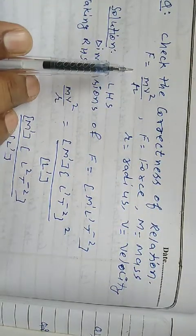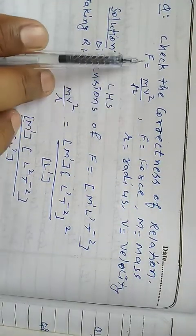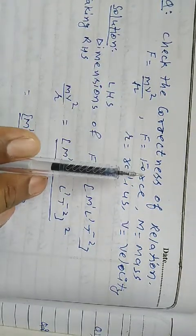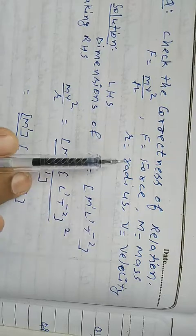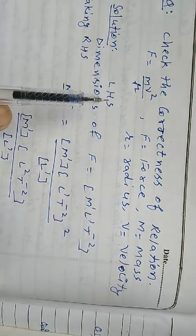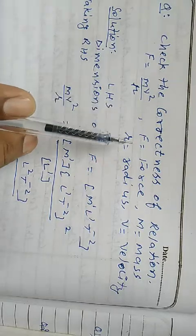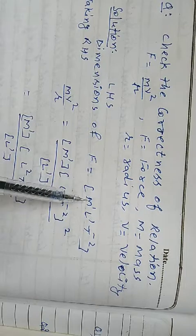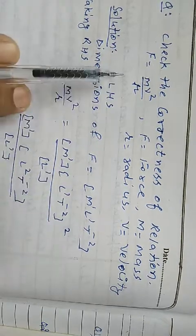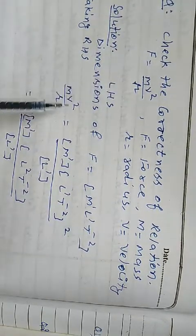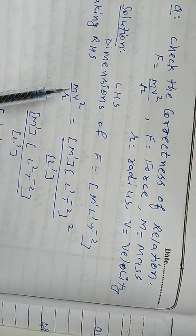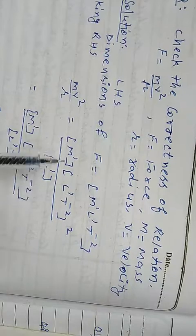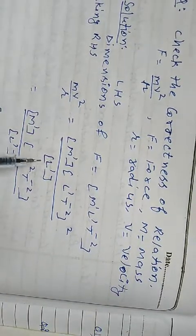Second example: on the right hand side, mv² upon r. Dimension formula of m is m¹, velocity is l¹t⁻² and it is power 2. Radius l¹.